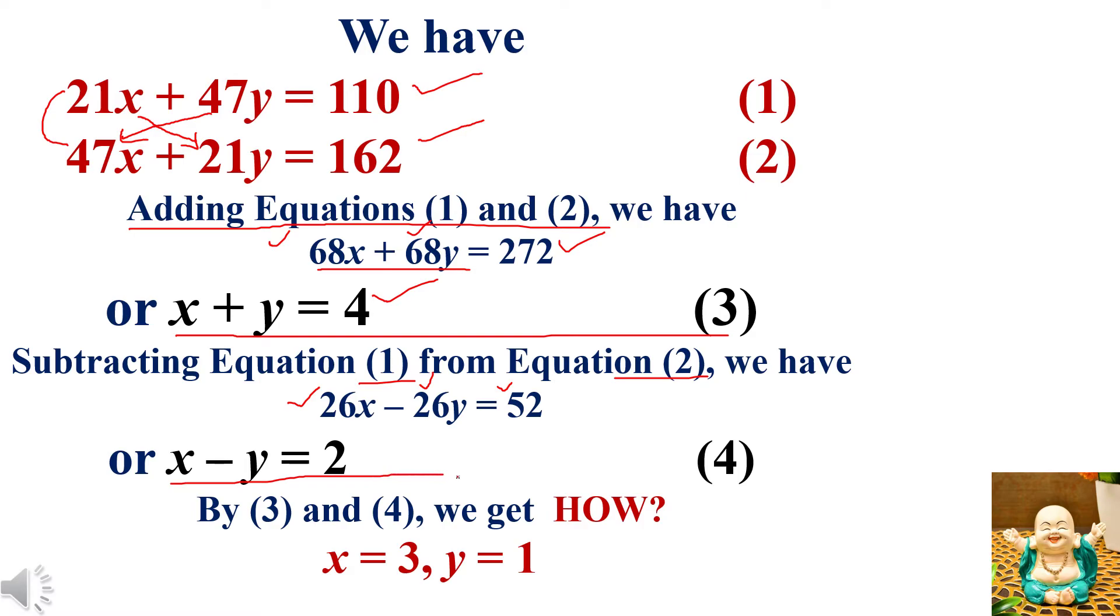By the third and fourth equations, we eliminate y like that: x plus y equals 4 and the fourth equation is x minus y equals 2. When we add the third and fourth equations, we eliminate y. After adding, y cancels out, it becomes 2x equals 6, and x equals 3.